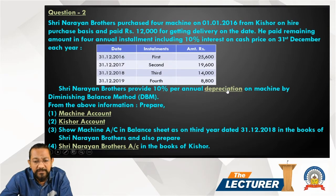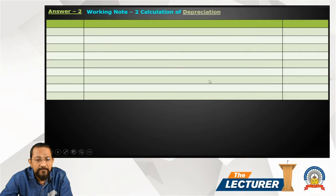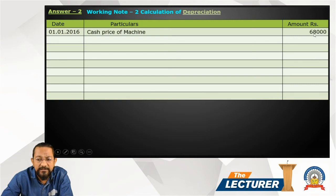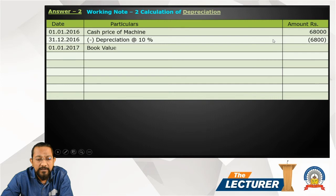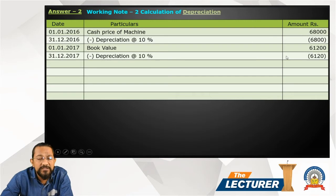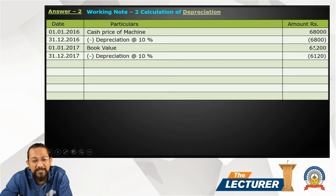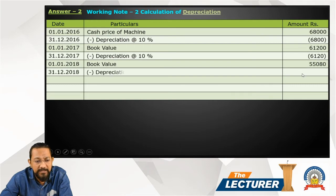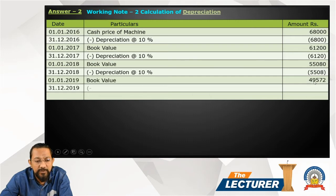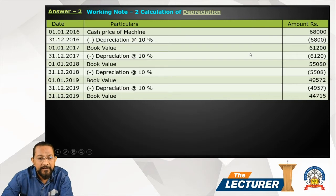The cash price is 68,000. Now we calculate the book value by applying depreciation. Using the diminishing balance method at 10%: Year 1 opening 68,000, depreciation 6,800, closing 61,200. Year 2: depreciation 6,120, closing 55,080. Year 3: depreciation 5,508, closing 49,572. Year 4: depreciation 4,957, closing 44,615.